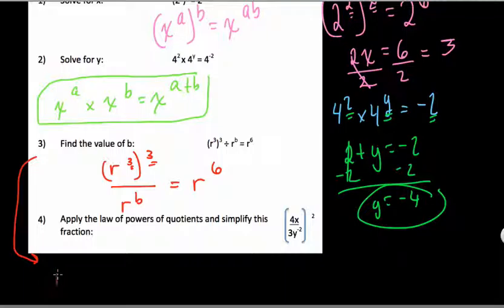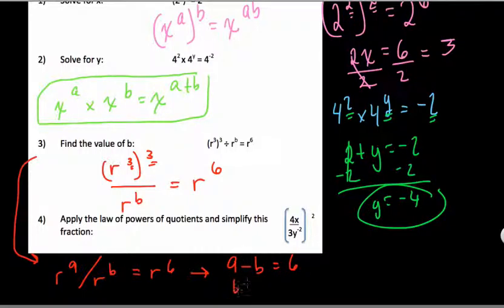So if we multiply these two, we get r to the ninth over r to the b. And we know that in the end, we're going to get r to the sixth. So we can think of this in terms of our laws. 9 minus b should equal 6. So what value of b does that? And the answer is 3.